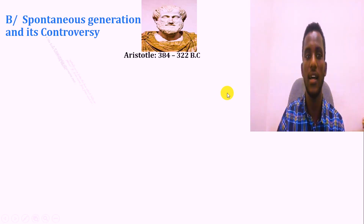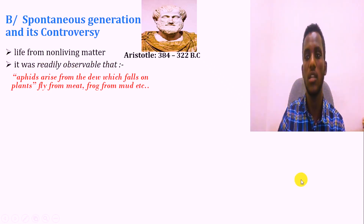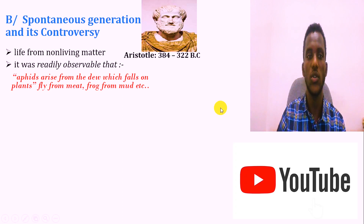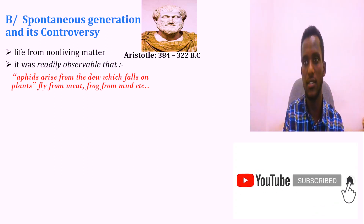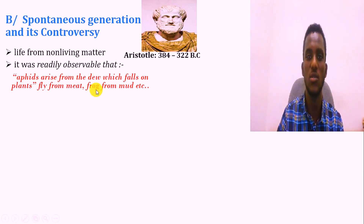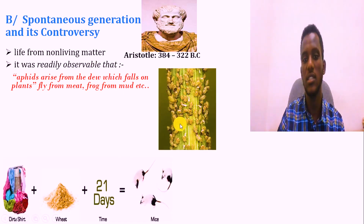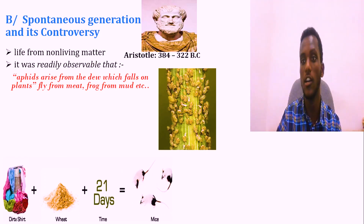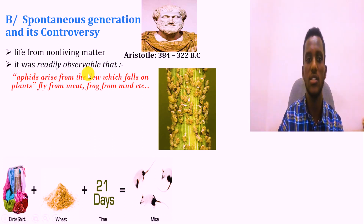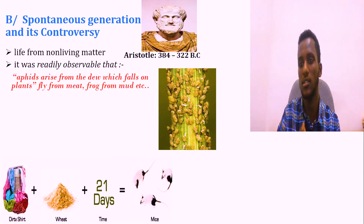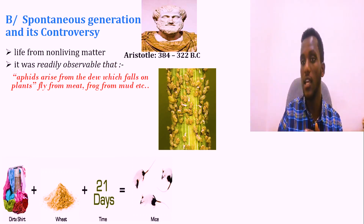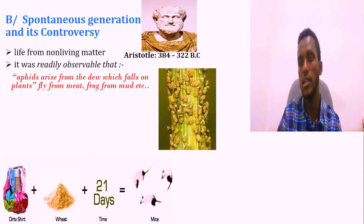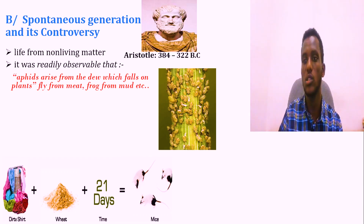Spontaneous generation states that living things come from non-living matter. For example, it was believed that amphibians and insects arise from plants, that flies come from meat, and that frogs come from mud.